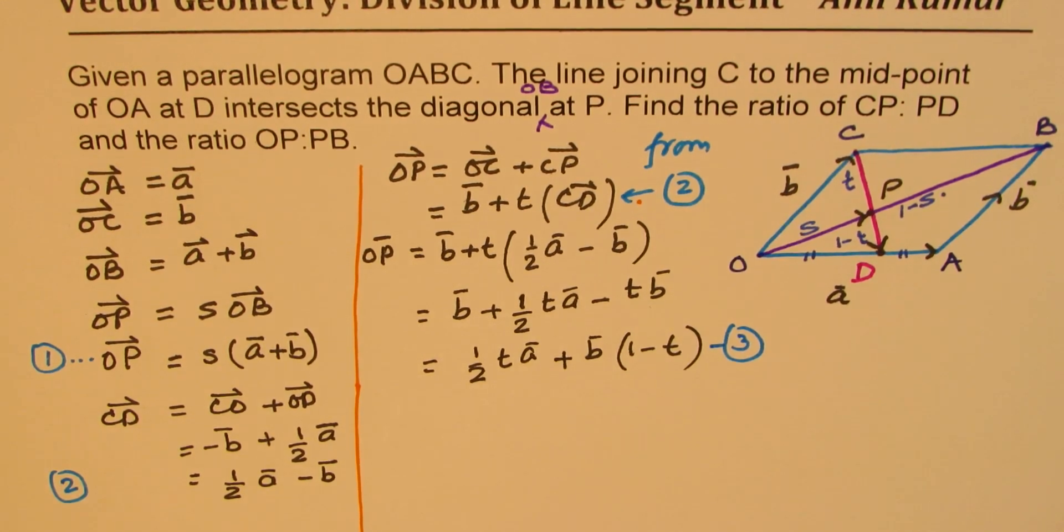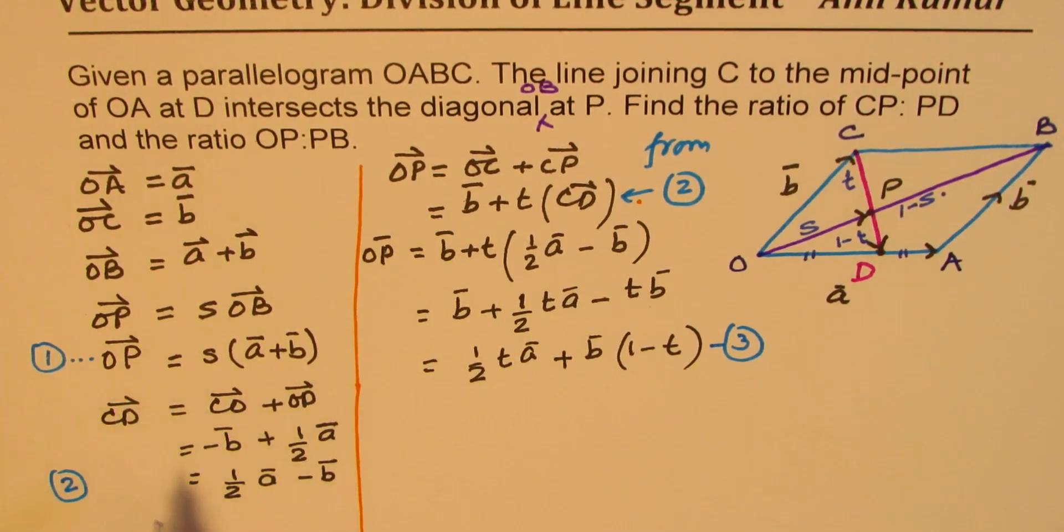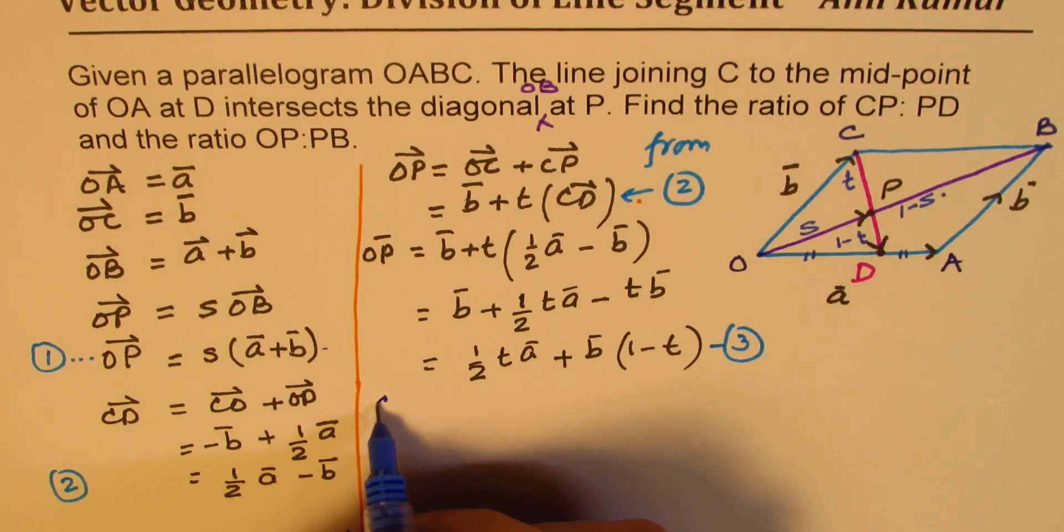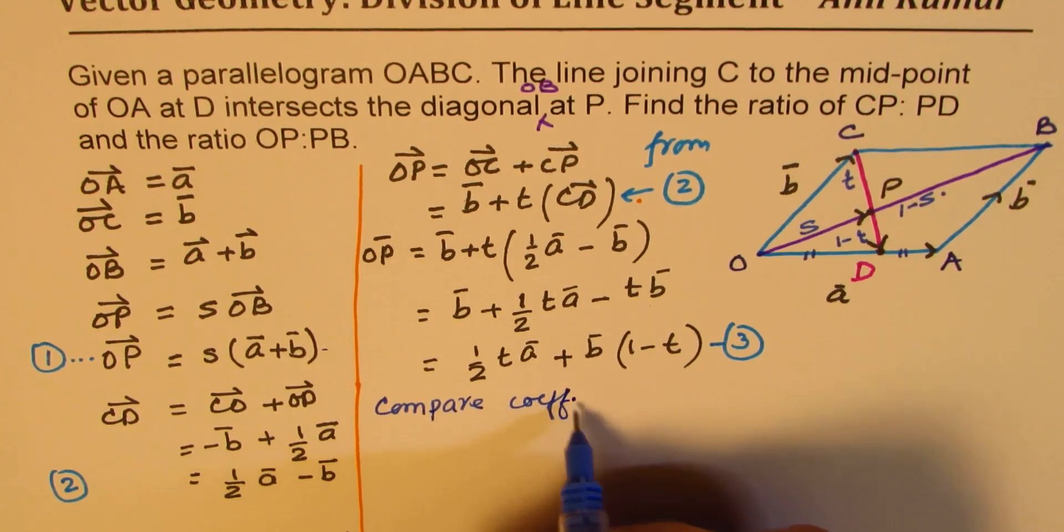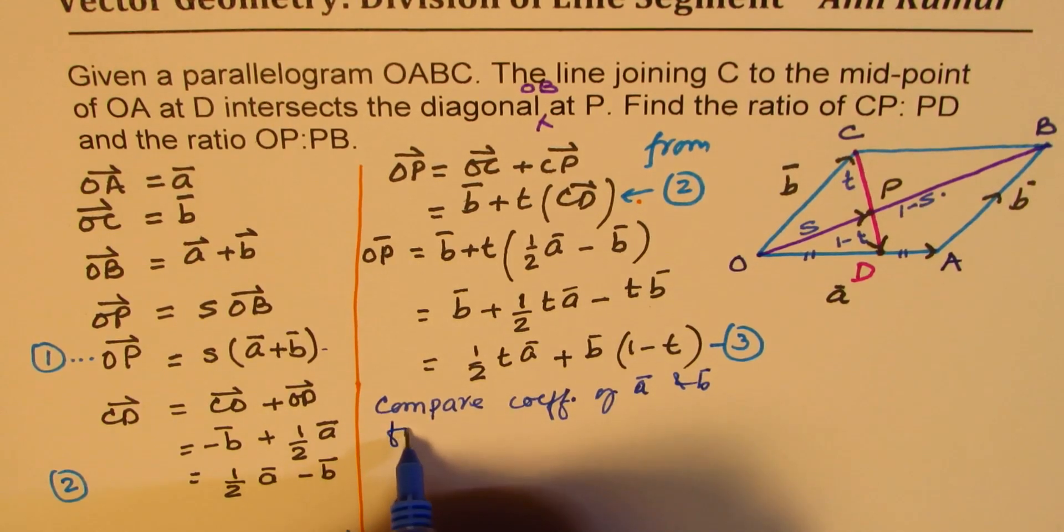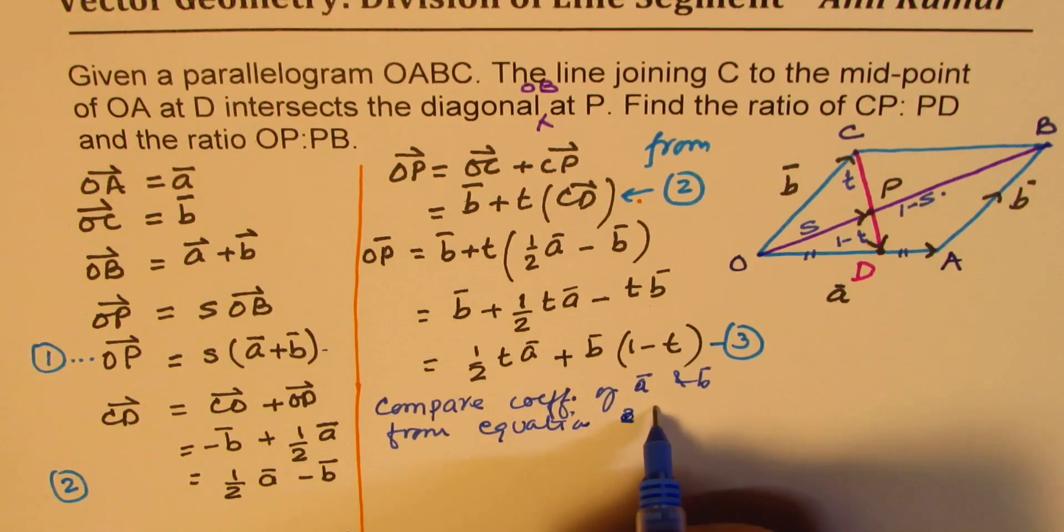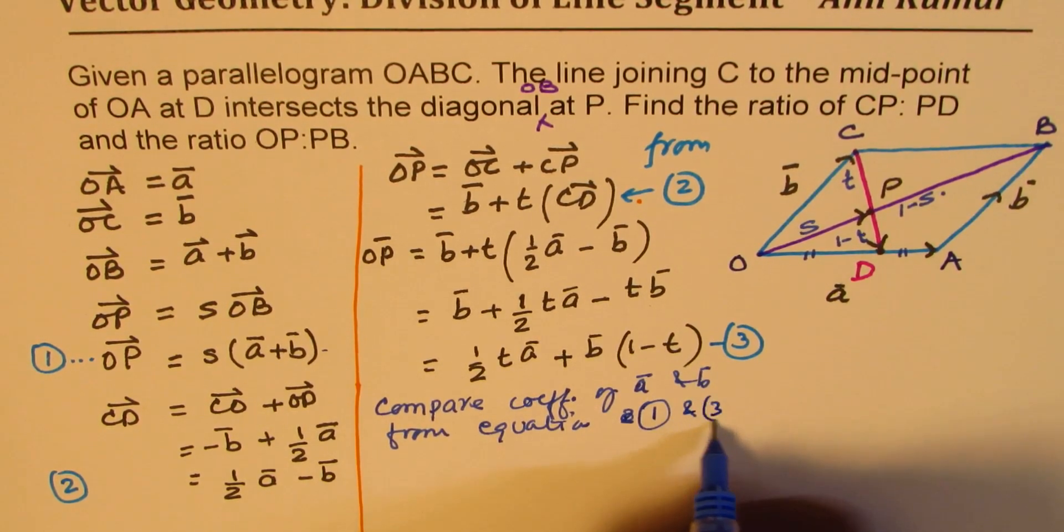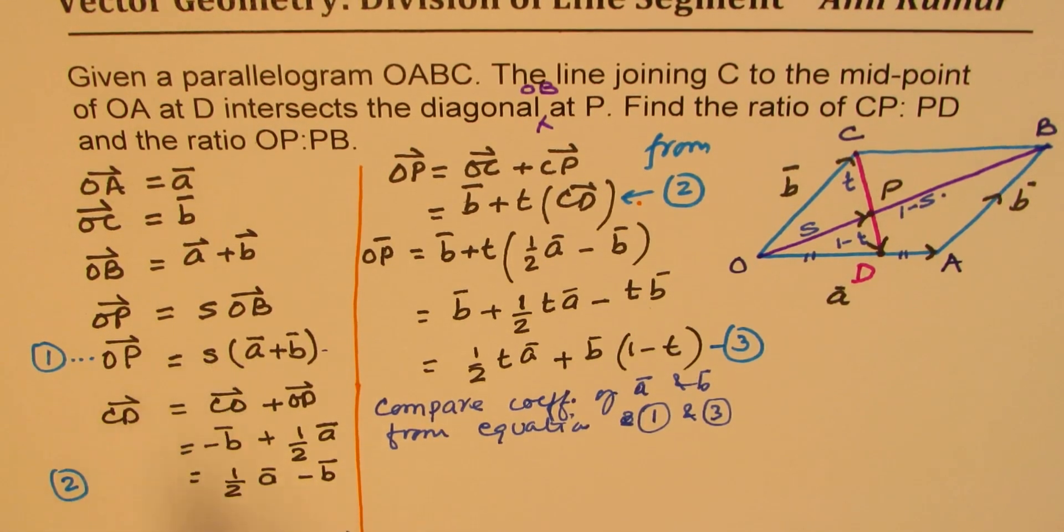Now, what we can do is that we can compare the coefficients of A and B from equation 1 and 3. So in equation 1, for A, the coefficient is S. So S is equal to, here, for A, the coefficient is half T.